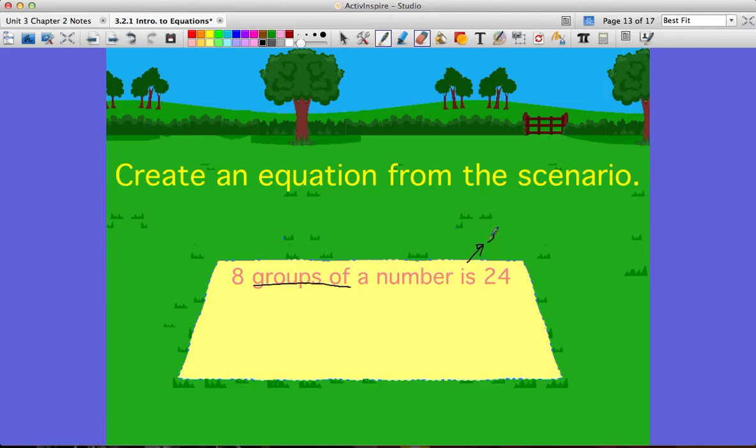So is is going to always be your equal or gives you. If you want to write these down, you can. Gives you, is, gives you, an equal, all synonymous in this case. So eight groups of a number, so eight times n equals 24.